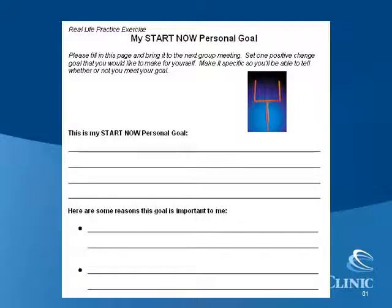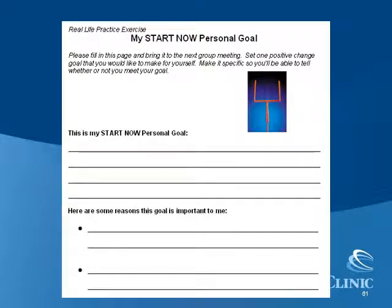Here is a page pulled from the participant workbook related to goal setting. This page gives a nice example of how the language in the StartNow manual is simple, clear, and direct, and the football goal post offers a nice visual to anchor the topic. Participants are asked to provide a specific personal goal for StartNow, as well as reasons why that goal is important to them. At the start of the next meeting, participants will be encouraged to share their goal and reason with the group to generate discussion and feedback.